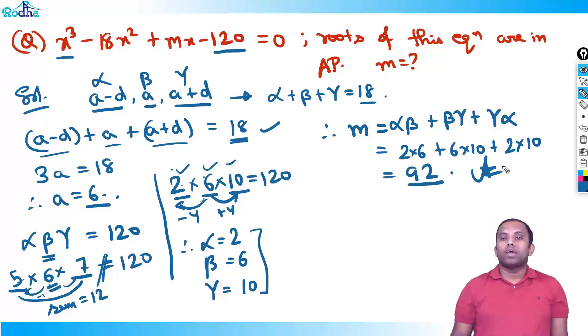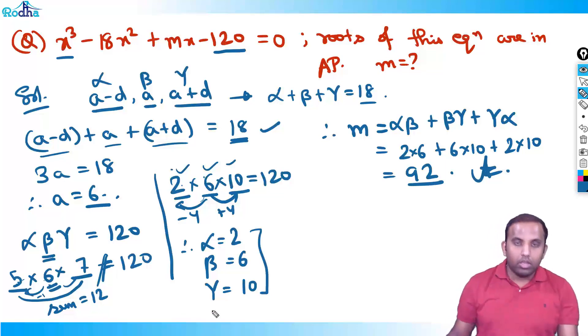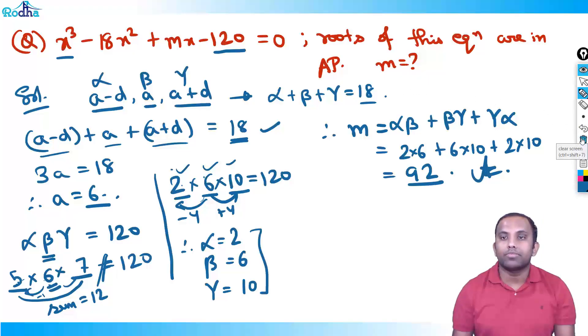So the answer to this question is m = 92. I hope it is clear — a good application of the concept we just learned. Next questions will be done in the next video. Thank you.